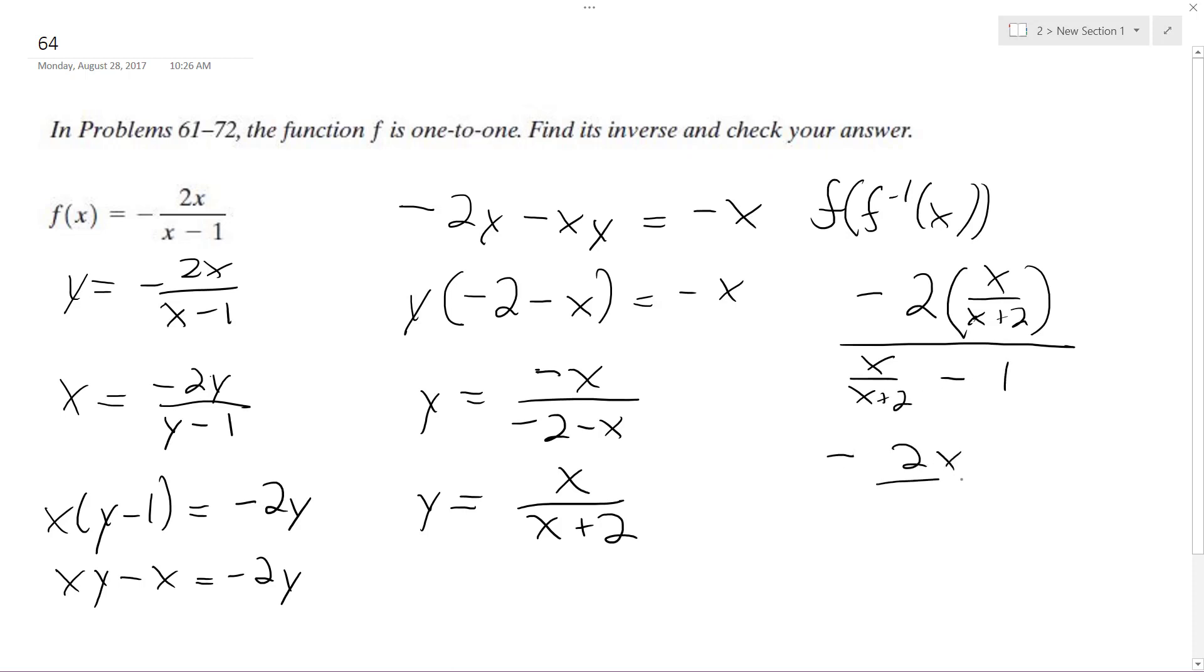So we get negative 2x over x minus 2, because I distribute the minus sign here, over x plus 2.